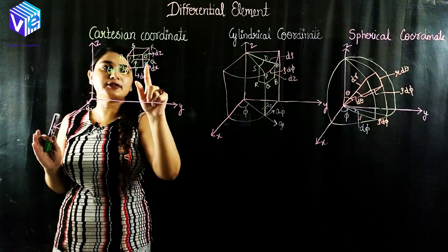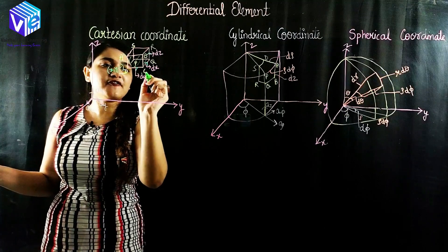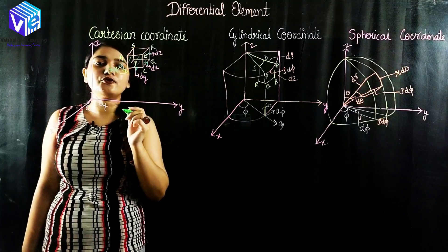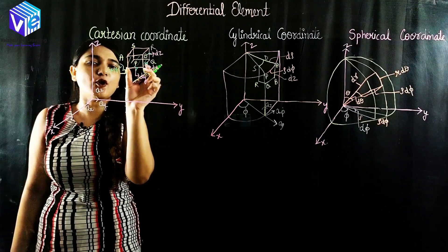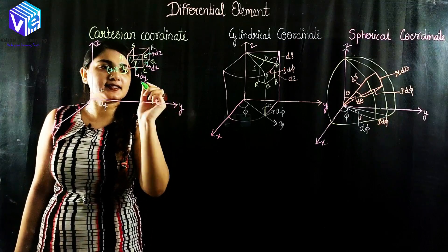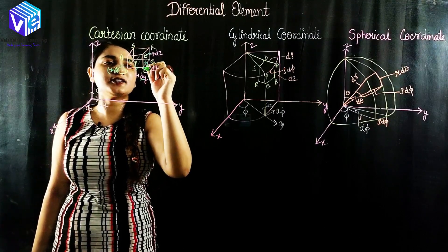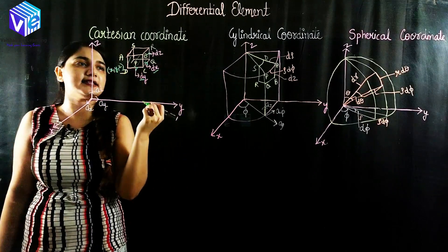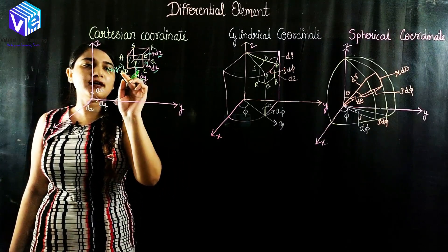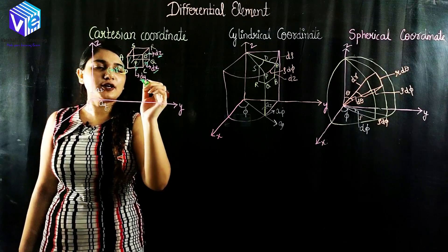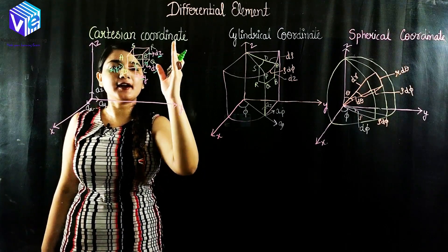Suppose I have to move from point D to point R. I can follow this path: move from D to C first, then C to Q, and from Q to R. D to C represents a small change in the y direction, represented as dy. The small element of x direction is represented as dx, and the small element of z direction is represented as dz.